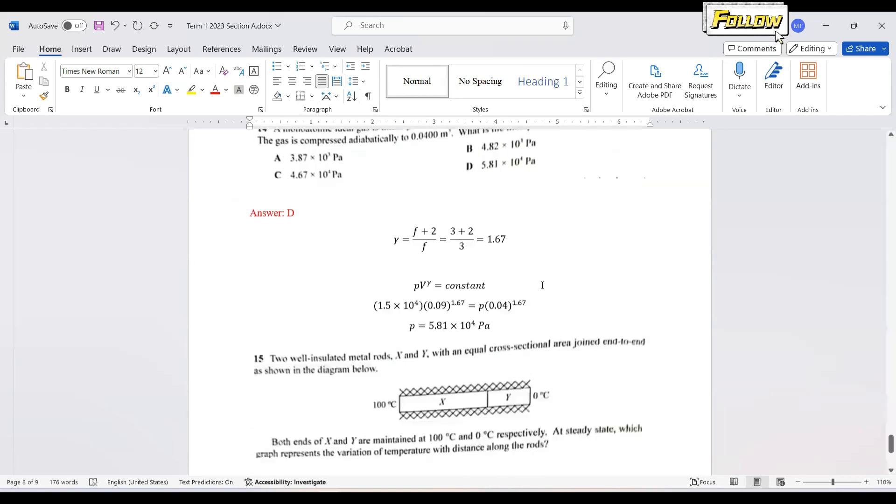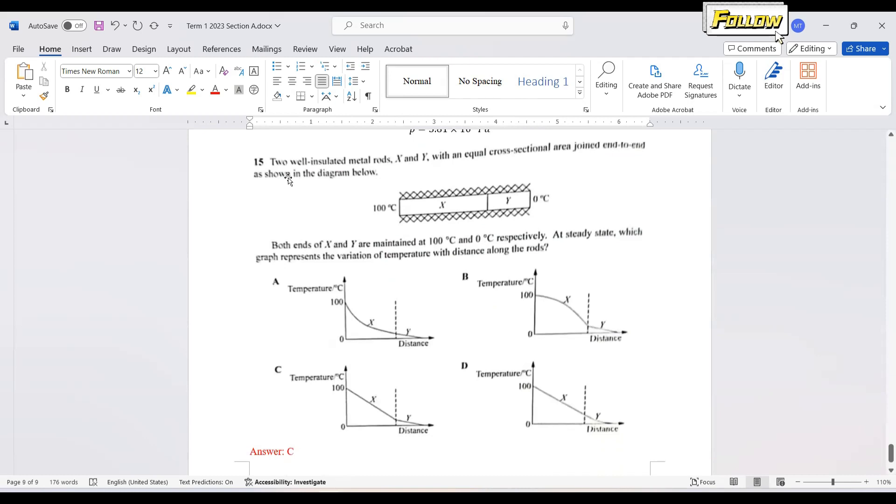Moving to the last question. Two well-insulated metal rods X and Y with an equal cross-sectional area joined end-to-end as shown in the diagram. Both ends are maintained at 100 and 0 degrees Celsius. At steady state, which graph represents the variation of temperature with distance along the rod? I think this is also a bonus because we could see the answer A, B, and D are quite strange. The one we have learned that it should be a constant. At steady state, the object should have a constant temperature gradient. So answer would be C in this case.